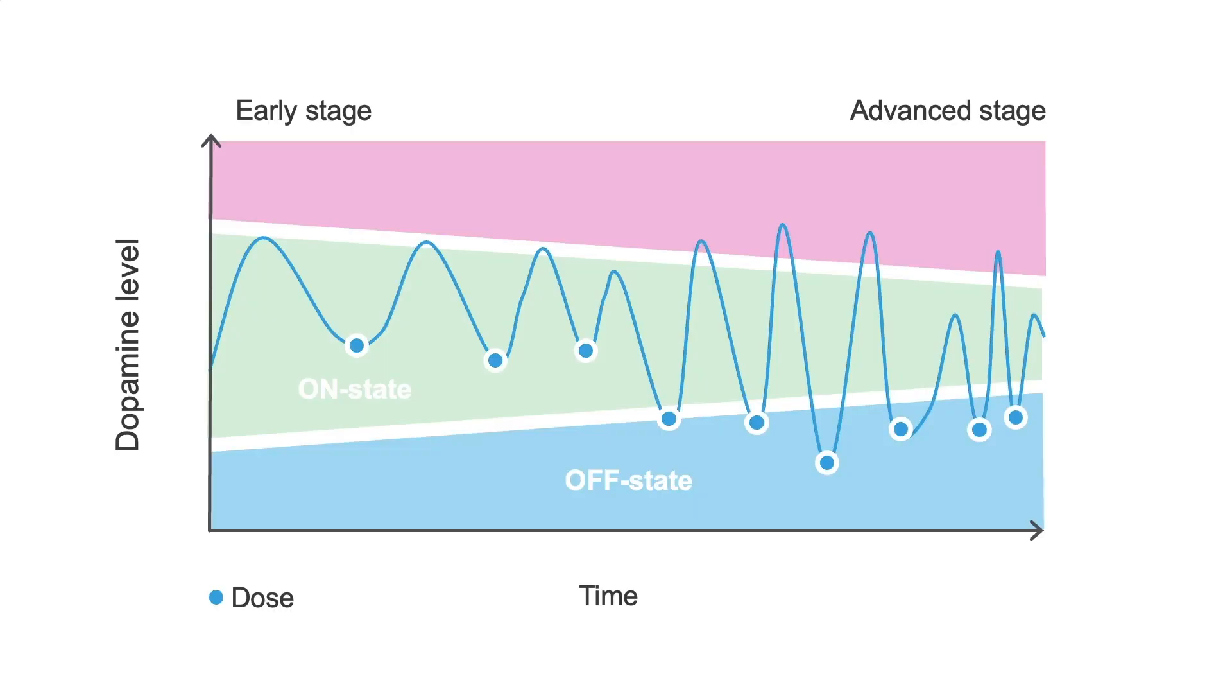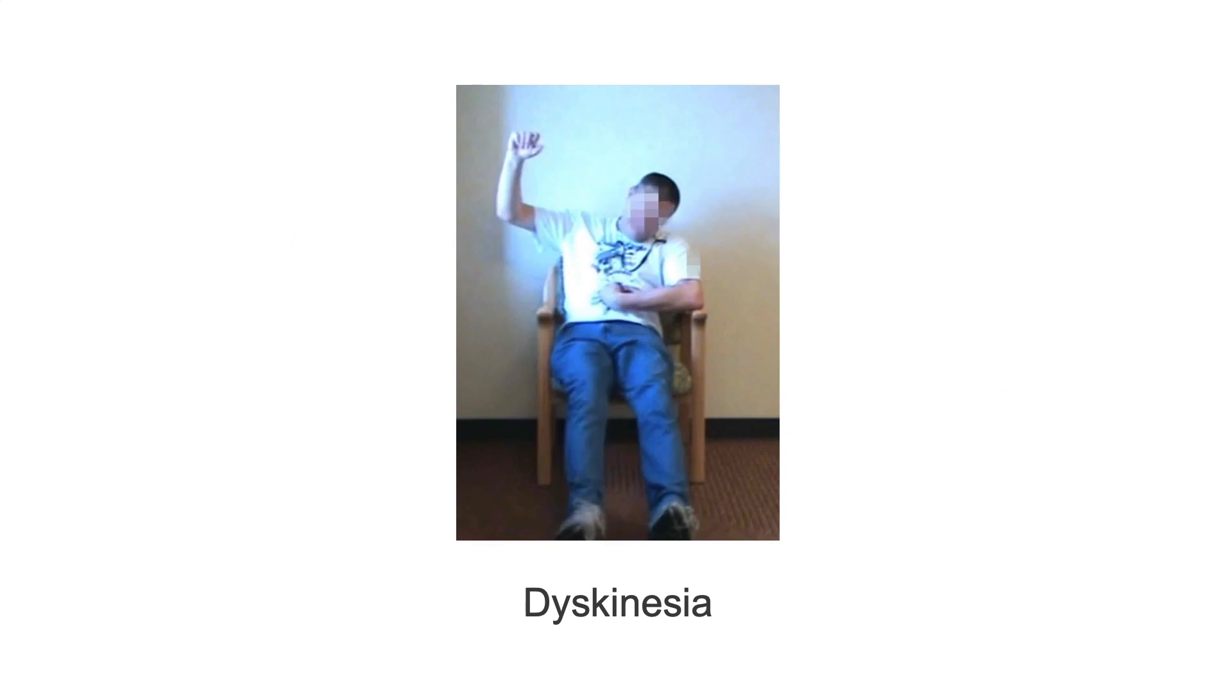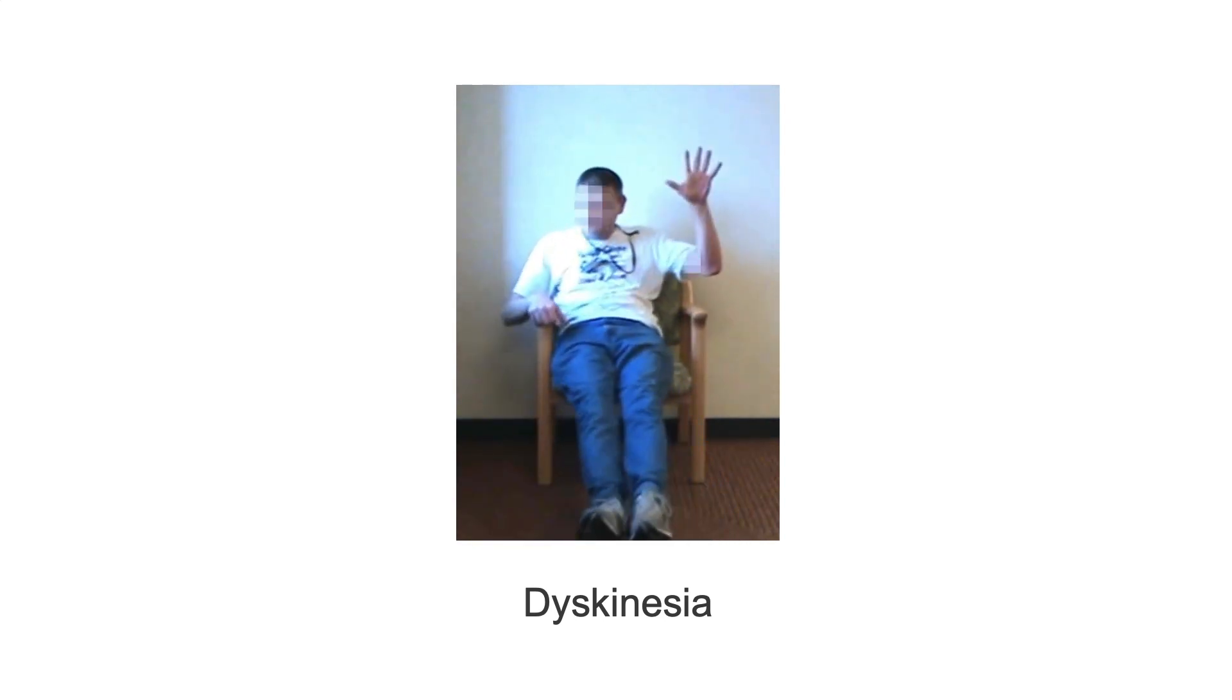Dyskinesia refers to involuntary movements, including head bobbing, swaying in the trunk, and fidgeting in the extremities.